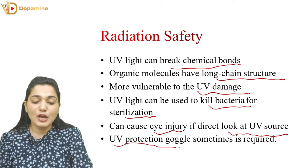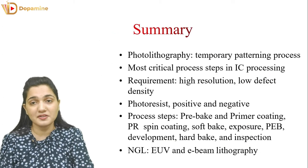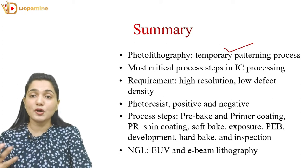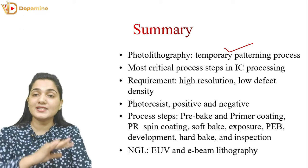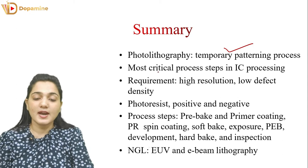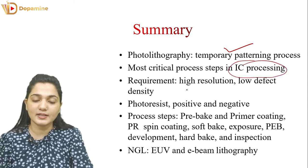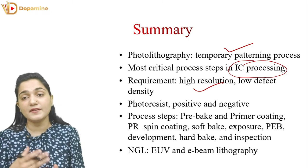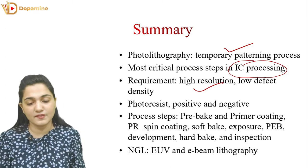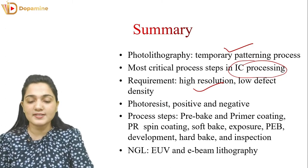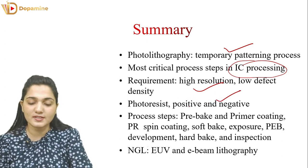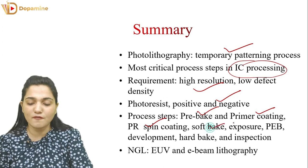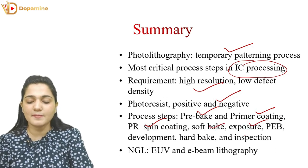In summary, Photolithography is a temporary patterning process — after one process step the pattern is used and then removed, making it a temporary process. It is the most critical process step in IC processing, because with photolithography alone we define the resolution and defect density, and we create structures like MOSFETs, transistors, and diodes. We studied photoresist components and two types of photolithography: positive and negative. The process steps are: pre-bake, primer coating, photoresist coating, soft bake, exposure, post-exposure bake, development, hard bake, and inspection.